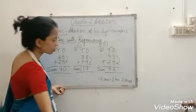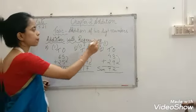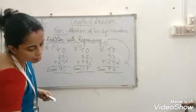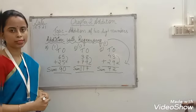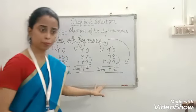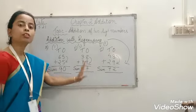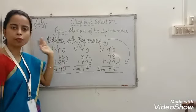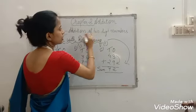So children, this is how you do addition without regrouping and with regrouping. Whenever the digit in the ones place is more than 9, you carry over to the tens place. In today's class I showed you addition facts, certain points to remember while doing addition for 2, 3, and 4-digit numbers, addition without regrouping, and addition with regrouping of two-digit numbers.